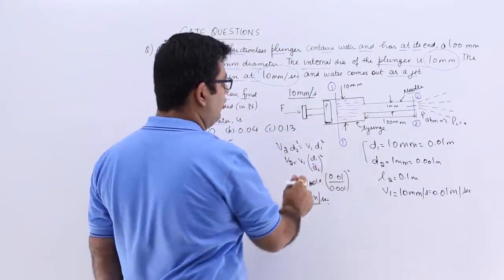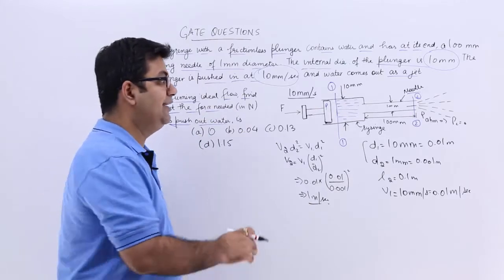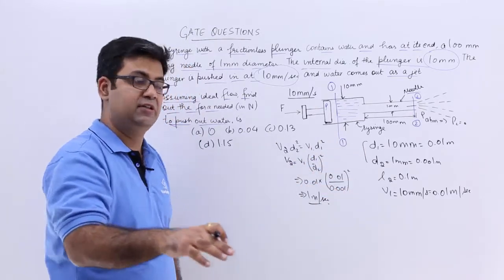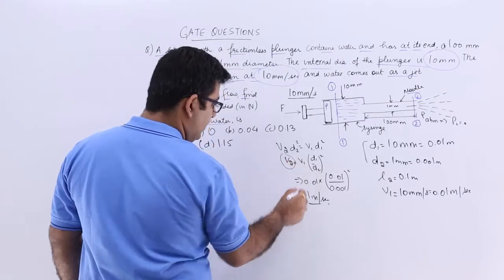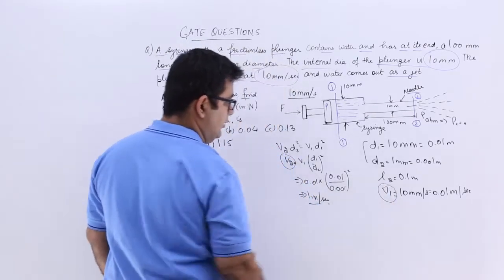So now we are just left to find out the value of P1. And let us assume the datum is also same, Z1 equal to Z2. So all you need to find out is the velocity heads.